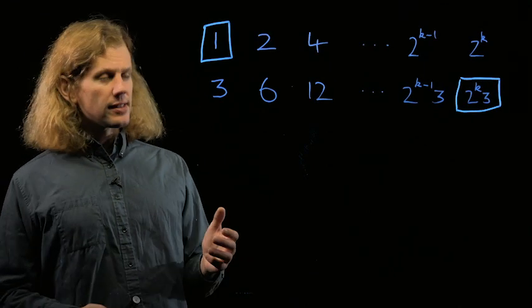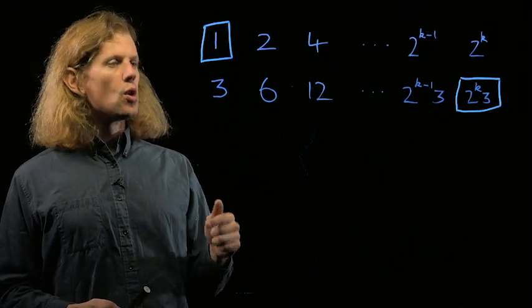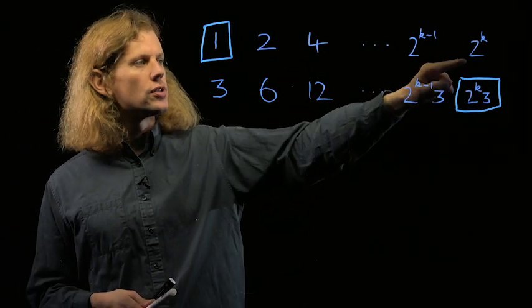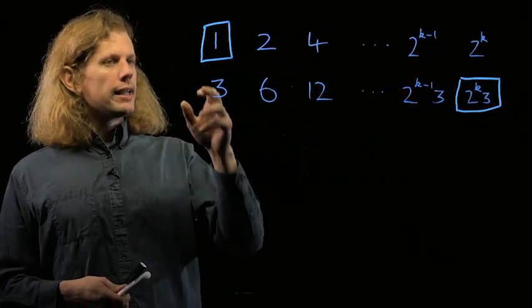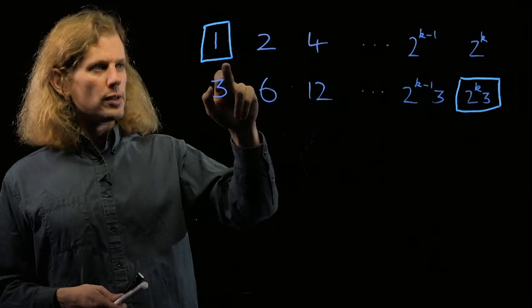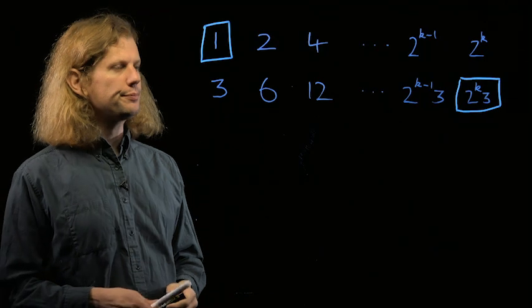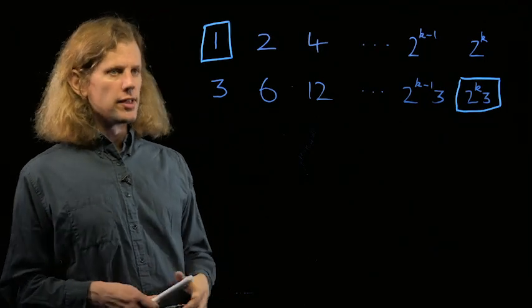One way we can break it up in this case is to ask ourselves what the last term we use in the top row is. So we can break it up based on whether the last term in the top row is 1 or 2 or 4 or so on up to 2 to the k. Let's talk about this in turn.